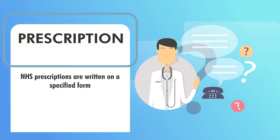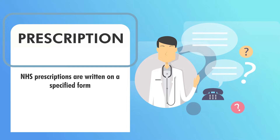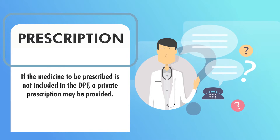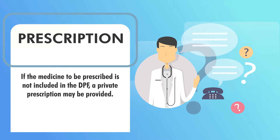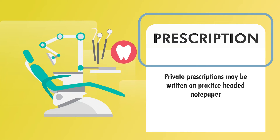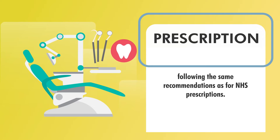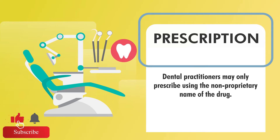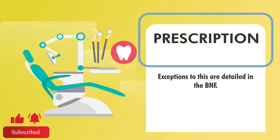NHS prescriptions are written on a specific prescription pad. Any medication that is not present within the DPF formulary can also be prescribed, but this can only be prescribed on a private basis. Private prescriptions can be written on a practice headed paper following the same recommendations for NHS prescriptions. It is recommended that prescriptions are only done based on the non-proprietary name of the drug — so the generic name of the drug is used rather than the trade name. There are exceptions to this, which are included in the BNF.